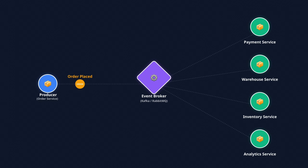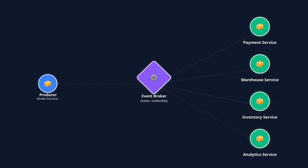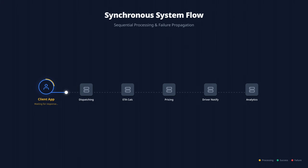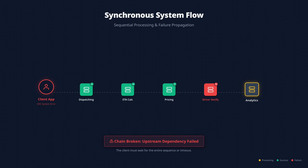Another common reason is when you have natural fan-out workflows. Fan-out is a super common system design pattern — all it means is that one event needs to trigger multiple downstream events. For example, a rider requesting a ride on Uber: one ride-created event might need to go to dispatching, ETA calculations, pricing, driver notification, and analytics all at once. If you depended on every single one of those servers to respond synchronously with no failures, your users would not be very happy.